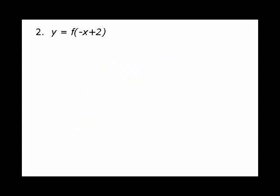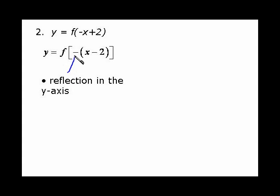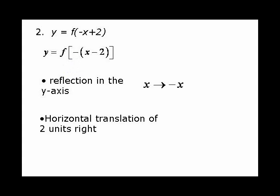Let's look at the next one. y equals f(-x+2). You want to do some work on that equation. You will recall that you must factor out the negative from that expression. It becomes f(-x-2) in brackets. We have two transformations: a reflection in the y-axis, courtesy of that negative, and a horizontal translation of 2 units to the right.